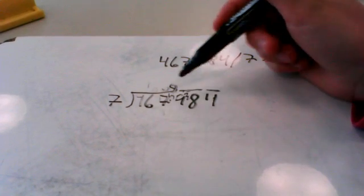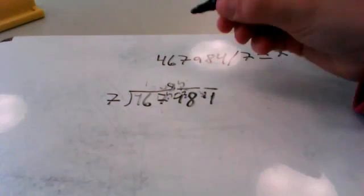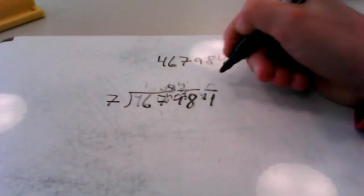And then 38 is 5 remainder 3, then 34 is 4 remainder 6.